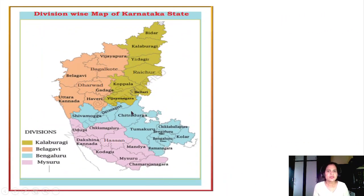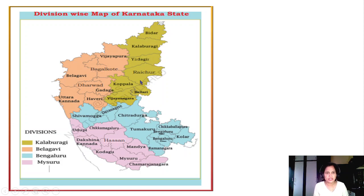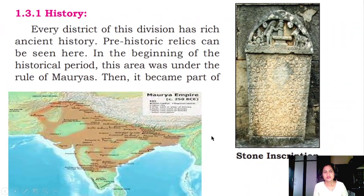See where the Kalburgi Division is on the Karnataka map - highlighted in yellow color, that is the Kalburgi Division. We have already studied Bengaluru Division and Mysore Division. Now we are studying Kalburgi Division, and after that we go to Belgavi Division.